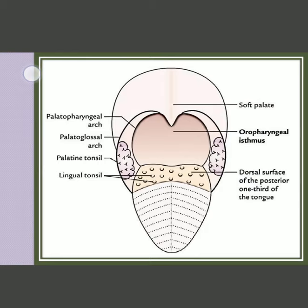In this figure again, the uvula and the two folds are shown. The palatopharyngeal arch forms the posterior boundary of the tonsillar fossa. This is the oropharyngeal isthmus, and the lateral boundaries are formed by the palatoglossal arch.